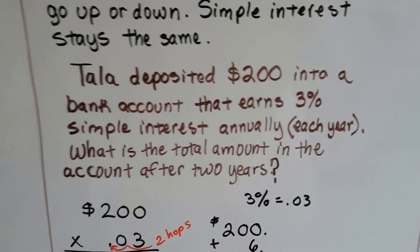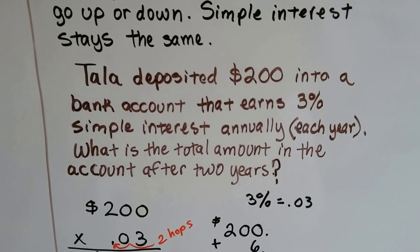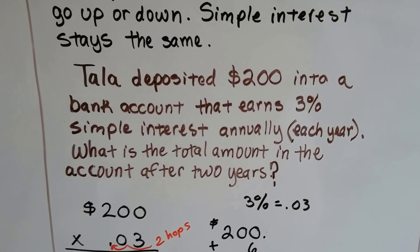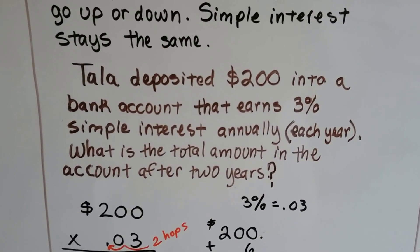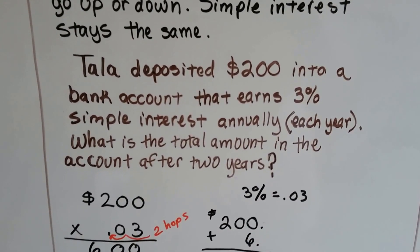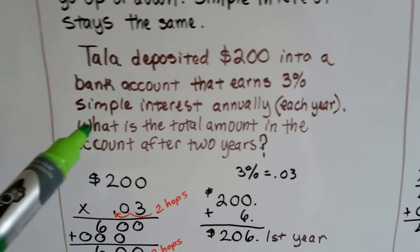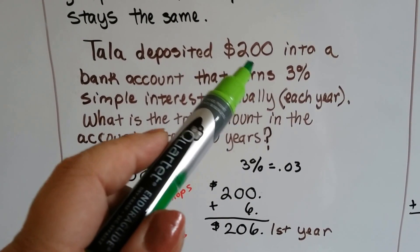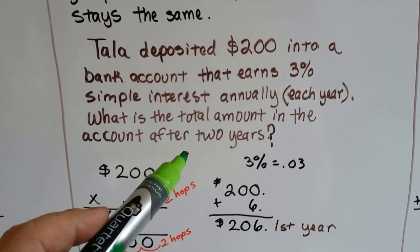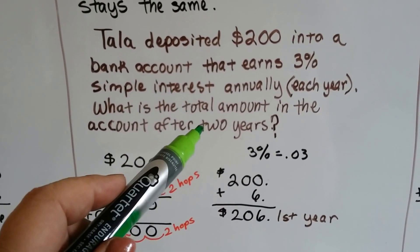Tala deposited $200 into a bank account that earns 3% simple interest annually, each year. What is the total amount in the account after two years? So this is a two-part problem because the first thing we need to do is figure out the first year and then find out the total and then figure out the second year.